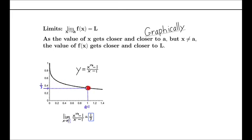Now that's not the value of the function. When you plug in 1 into the function, you're going to get 0 over 0 which is undefined. But the limit as x approaches 1 is 1/3rd, and we can see this description of x getting closer to a, but x not equal to a. The value of f(x) gets closer and closer to L by looking at this x right here and the corresponding function, which in this case is x to the 1/3rd minus 1 over x minus 1.